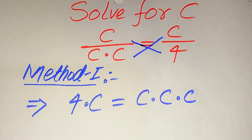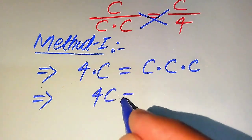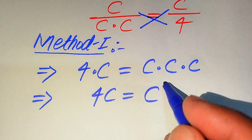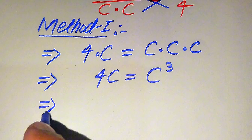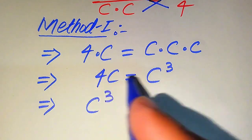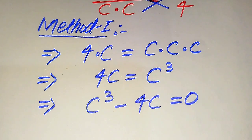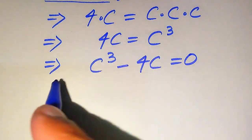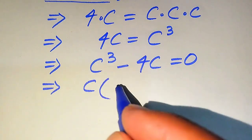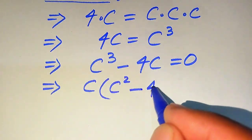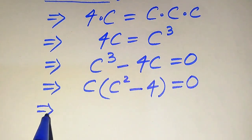So on the left hand side we have 4c, and when we multiply c three times it becomes c cubed. In the next step we move 4c to the right hand side, so it becomes c cubed minus 4c equals zero. Both terms involve c, so when we take c as common we get c times (c squared minus 4) equals zero.